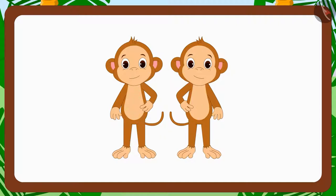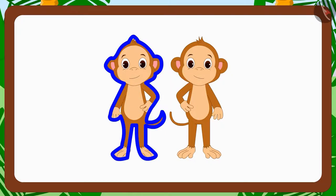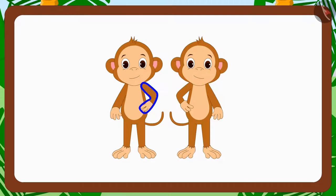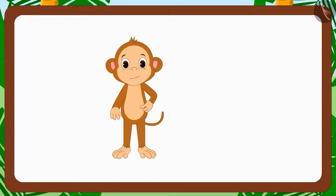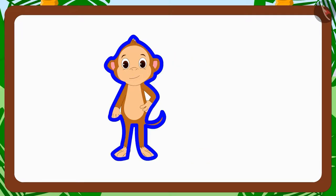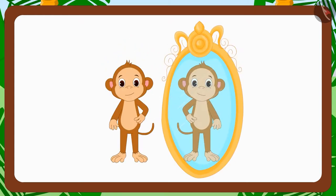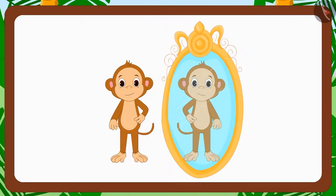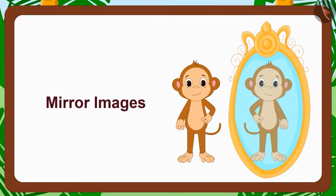Yes, this is correct. Whatever you are seeing in the left image is completely opposite to the image on the right. For instance, his left hand is on his waist in the left image, but in the right image, his right hand is on the waist. In fact, if you see the image of the left hand in front of the mirror, then you can see the image of the right hand in the mirror. Such images that are similar but completely opposite of each other are called mirror images.